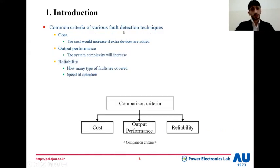The criteria while preparing any fault detection technique depends on three main points: cost, if there are any extra devices that are being used or changes to the main topology; output performance and complexity, how the system performs with the proposed fault detection method; and reliability, how many types of faults can be detected and the speed of detection. This is summarized in this figure.